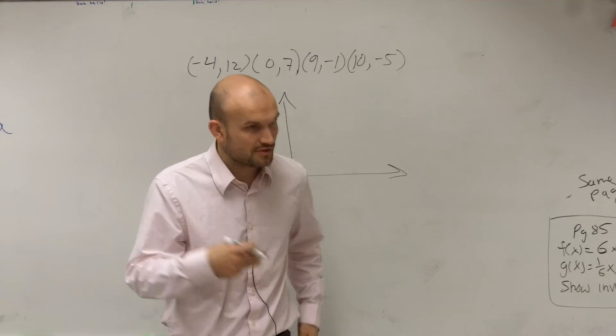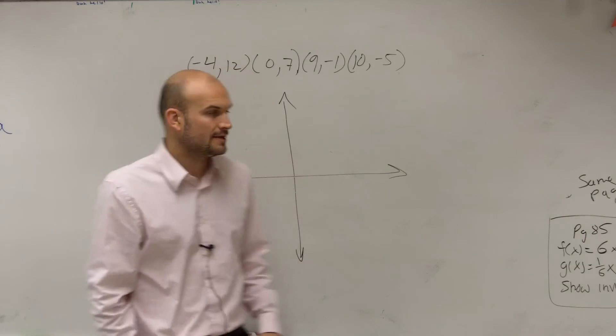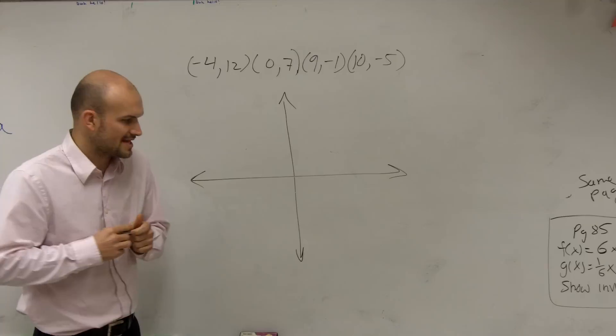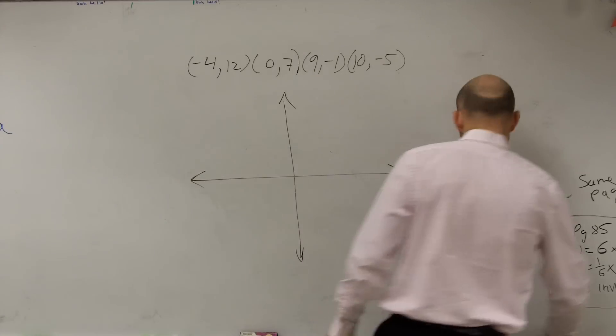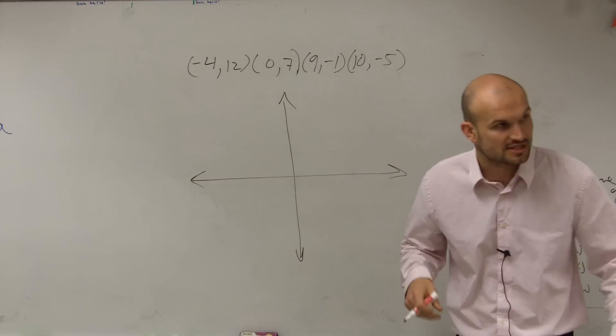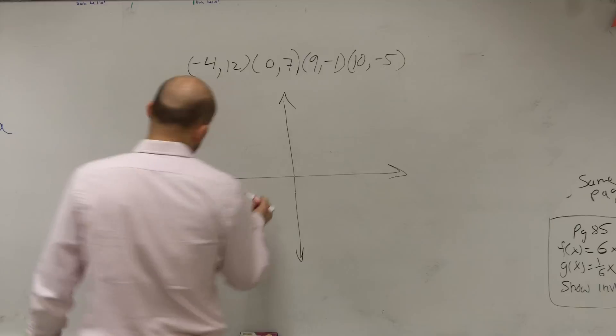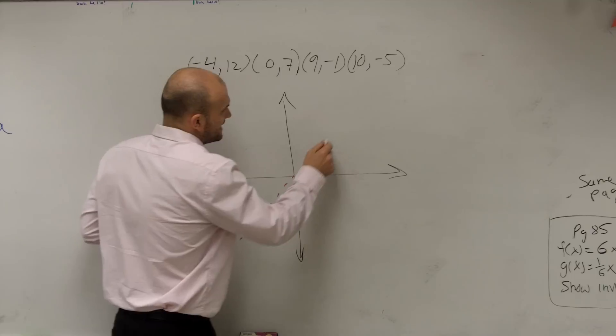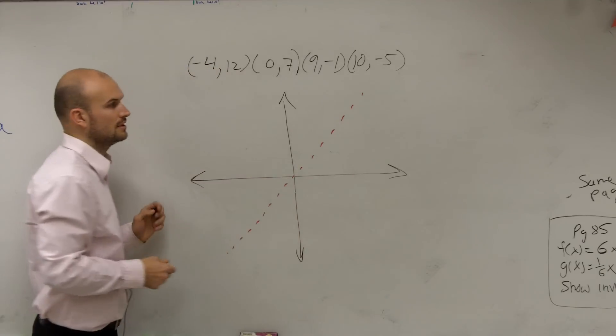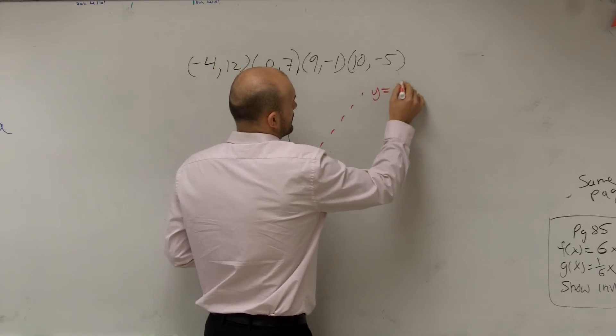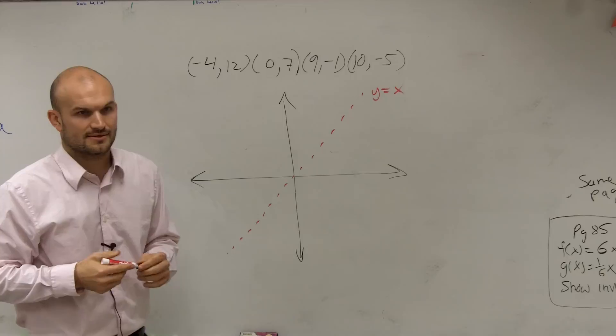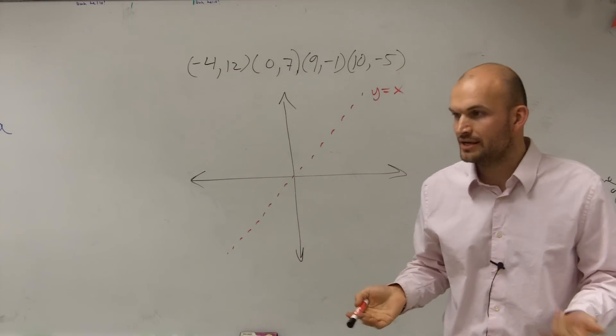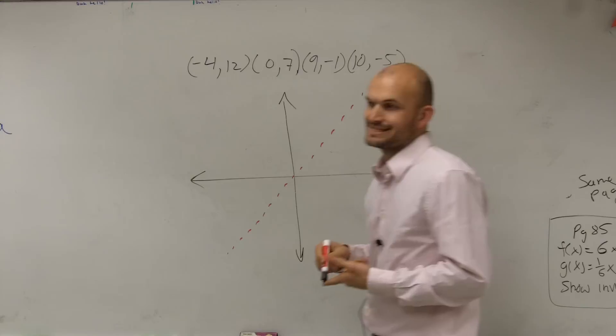But when finding the inverse, it was a step-by-step process that we did. Now, when we look at this graphically, how is the inverse represented? Well, there's one very important thing you guys need to understand about inverses compared to their functions. Inverses are reflected over the identity line from their function, which is the line y equals x. So y equals x is going to be the line of symmetry between a function and its inverse.